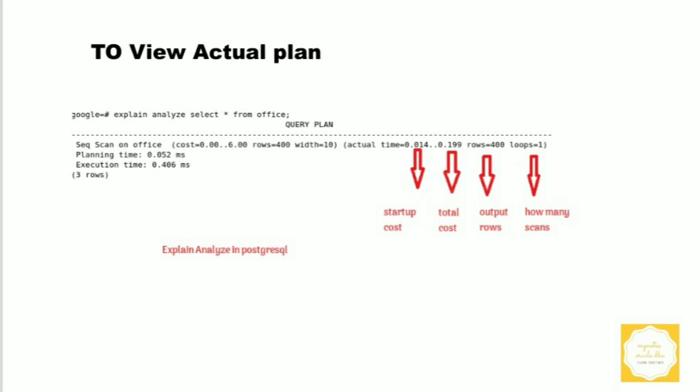Let's add the ANALYZE command to our previous query. As you can see, the plan now shows planning time and execution time. It also adds actual time for the sequential scan in a similar format: startup time — the time taken to start the node and begin the sequential scan; total time — the time taken to finish the query and return output rows; rows — the number of rows returned; and loops — how many sequential scans were performed. This query does one sequential scan, returns 400 rows, and takes around 0.406 milliseconds.